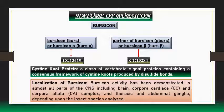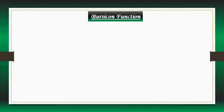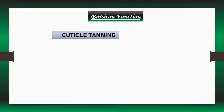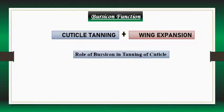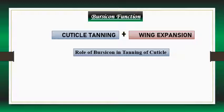Regarding localization: Bursicon activity has been demonstrated in almost all parts of the central nervous system of insects, including the brain, corpora cardiaca and corpora allata complex, and thoracic and abdominal ganglia, depending upon the insect species analyzed. Now we will come to the main important point — the function of Bursicon. Two important functions performed by Bursicon are cuticle tanning and wing expansion. We will mainly concentrate on the role of Bursicon in tanning and hardening of the cuticle.